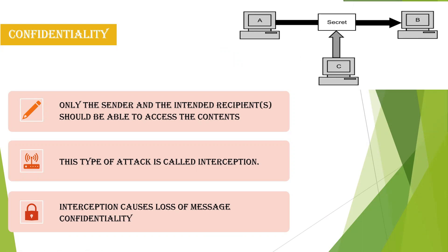No other third person is allowed to see the message — if that condition holds, confidentiality is maintained. However, if there is another user C who is accessing that secret — hacking the message sent from A to B — this is an attack called interception. Interception means there is a loss of message when sent from one end to the other, and confidentiality is obviously lost.